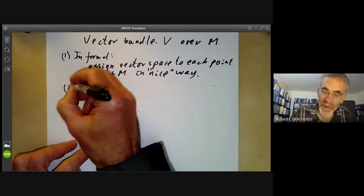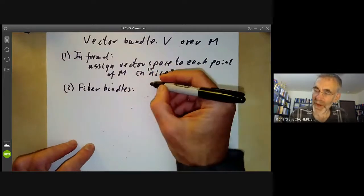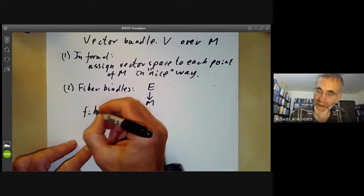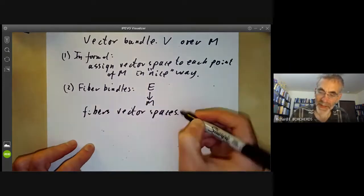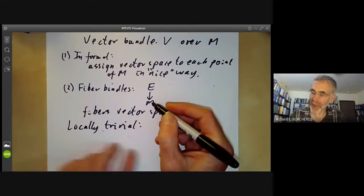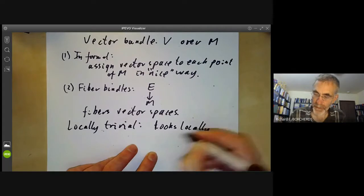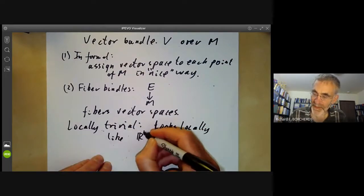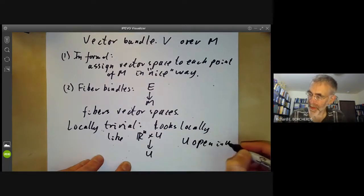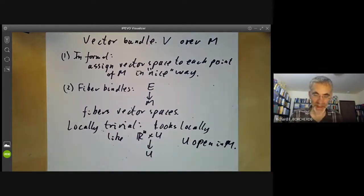You can define it more formally using fibre bundles: a vector bundle is a map from E to M such that the fibres are vector spaces, and it's locally trivial — you can cover M by open sets U such that it looks locally like ℝⁿ × U mapping to U. For real vector bundles we take ℝⁿ, for complex ones ℂⁿ, and so on.